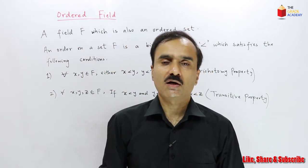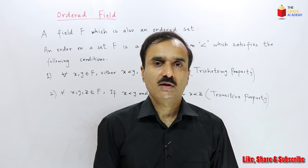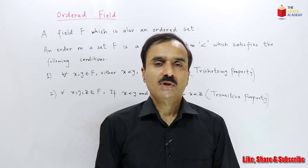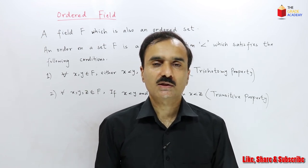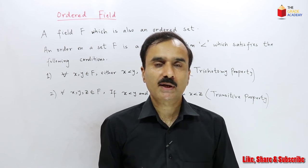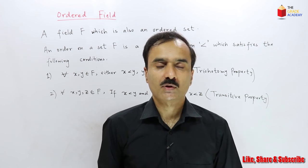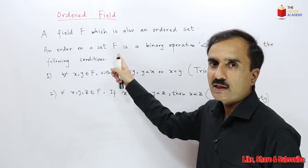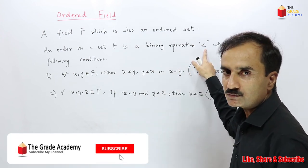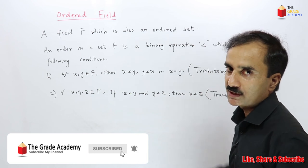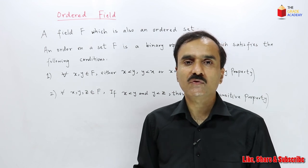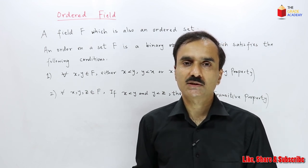The examples of ordered fields are the set of rational numbers and the set of real numbers. Previously we saw that the set of complex numbers is also a field, but the set of complex numbers doesn't have an order defined on it. So the set of complex numbers is not an ordered field because we cannot compare any two elements of the set of complex numbers by this operation less than. An order is not defined for complex numbers.